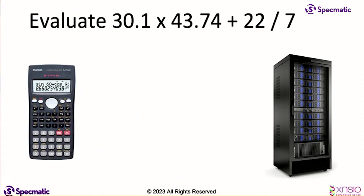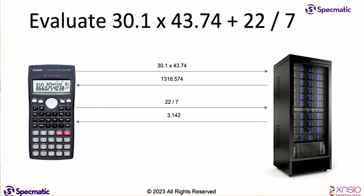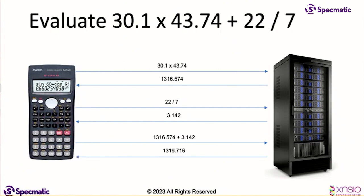Let's imagine I want to evaluate that expression. I'd basically first evaluate these two things and get a response back, then evaluate 22 by 7 and get a response back, take the results of those two, then send it to the server and get a result back. So there are basically three calls that I'm making.